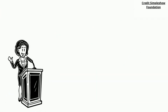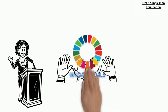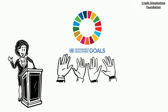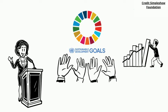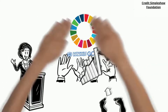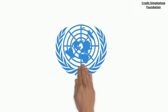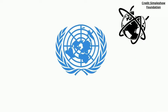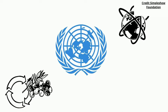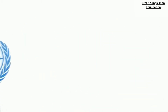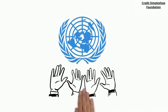In September 2015, world leaders gathered at the United Nations headquarters in New York and unanimously adopted the 2030 Agenda for Sustainable Development, a new universal standard for development that will ensure no one is left behind. The UN emblem consists of a projection of the globe centered on the North Pole. The projection is surrounded by images of olive branches, representing peace. Happy United Nations Day!